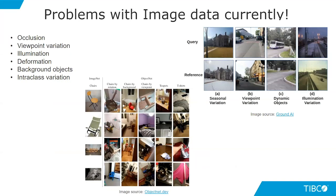There are still several open challenges with image data. Occlusion occurs when something blocks the object you want to predict. Viewpoint variation is a problem when the same object appears from different angles. Illumination differences — very dark versus very bright images — create challenges. Objects may also be deformed, and background clutter is an issue. Intra-class variation is also a challenge — for example, cats of different colors and sizes must all be identified as cats.